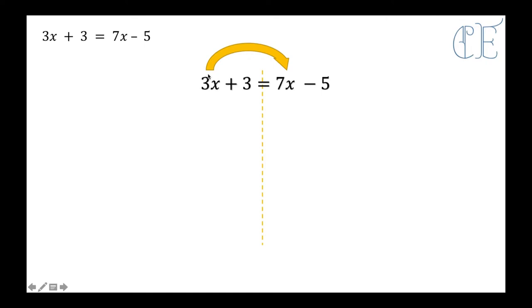This is a positive 3X, and in order to move it over to this side I need to subtract it. So that means I have to do 7X take away 3X, which leaves me with 4X. On this side I'm left with 3 because I've moved this one, and on this side this now becomes 4X because I've taken away the 3. And then we've just got the minus 5 on the end.